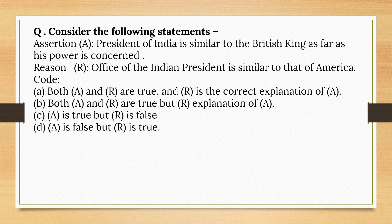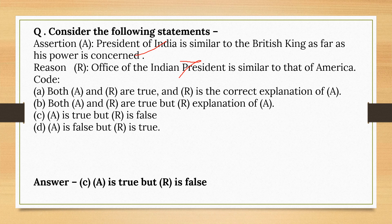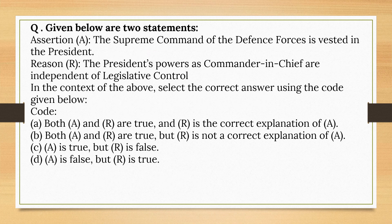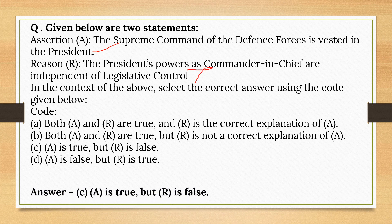Assertion and Reason: The President of India is similar to the British King as far as his power is concerned — correct. However, the reason that the Office of the Indian President is similar to that of America is not correct. So the correct option is A is true but R is false. Second pair: The supreme command of the defense forces is vested in the President — correct. But the President's power as commander-in-chief is independent of legislative control — not correct. So again, A is true but R is false.